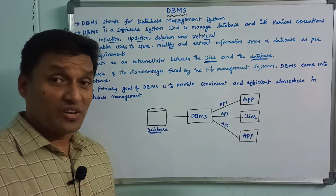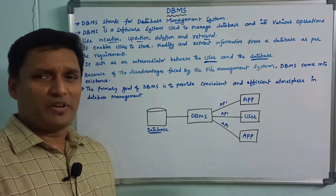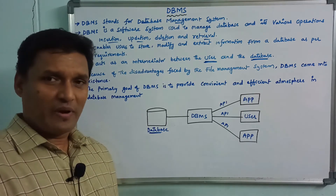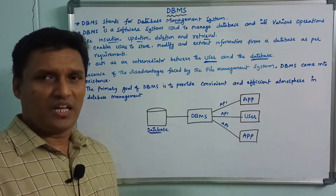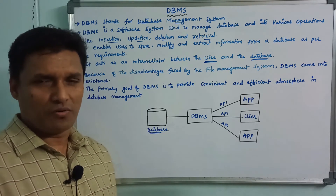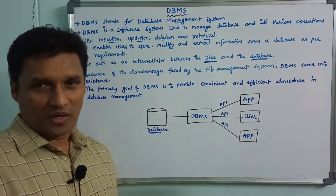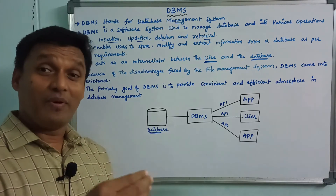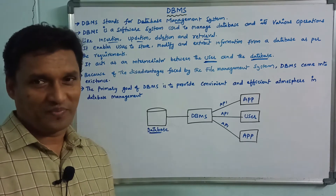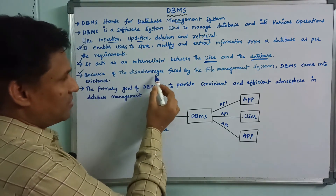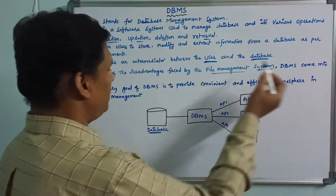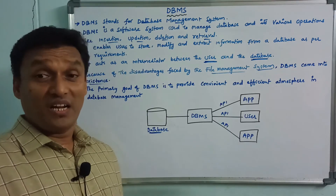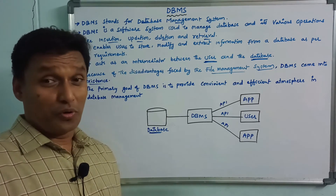Why was DBMS introduced? The first database system was the file management system, used in the 1960s, but it had a lot of disadvantages. Because of the disadvantages faced by the file management system, DBMS came into existence. It was developed in the 1970s.